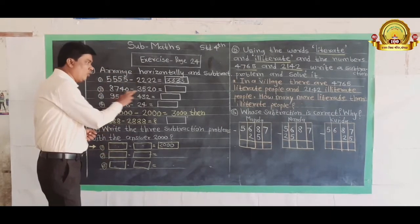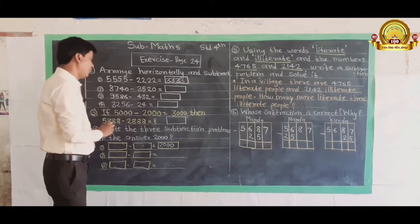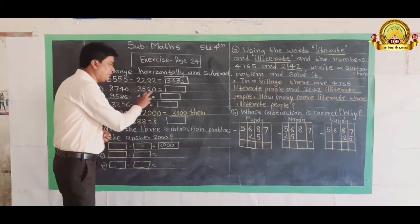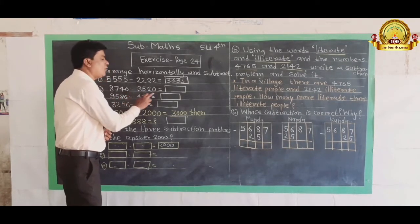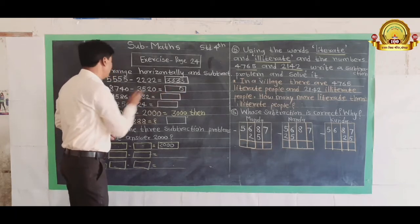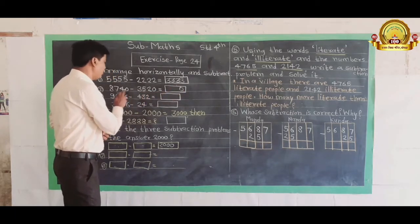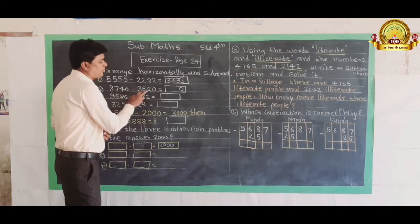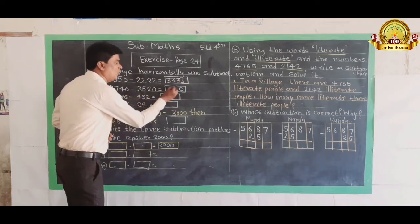This is 0 and here is also 0, meaning the unit place is equal to 0. So 4 minus 2, here is 10th place for 4 and here is 10th place for 2. 4 minus 2 is 2.